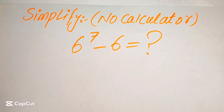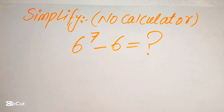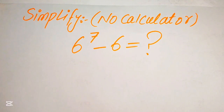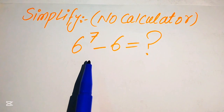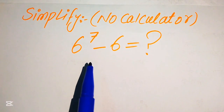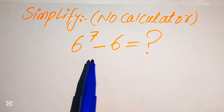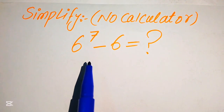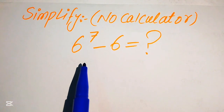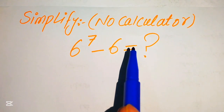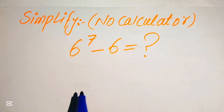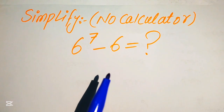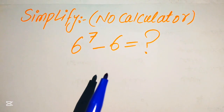Let's simplify this algebraic expression: 6 to the power of 7 minus 6. We will write this in simplified form. Note that a calculator is not allowed in this problem, so we will show all of the working on paper.